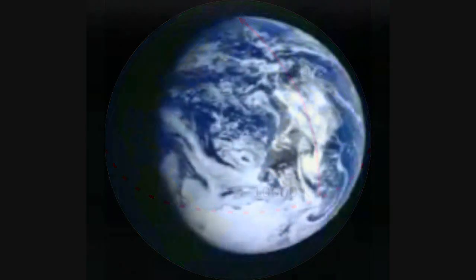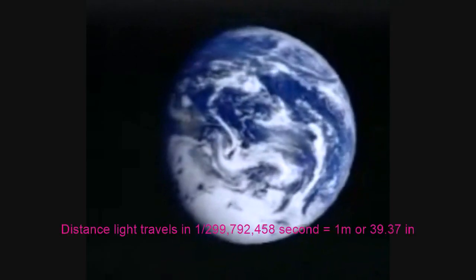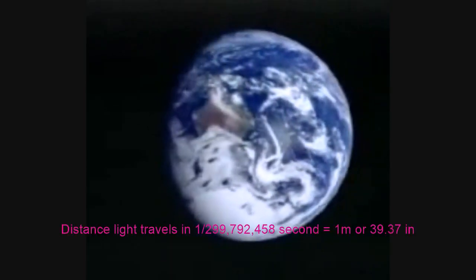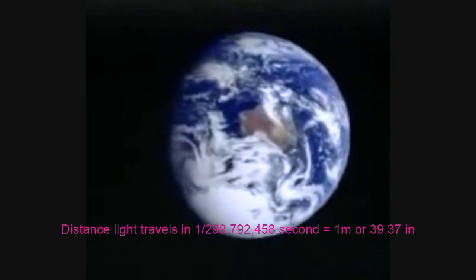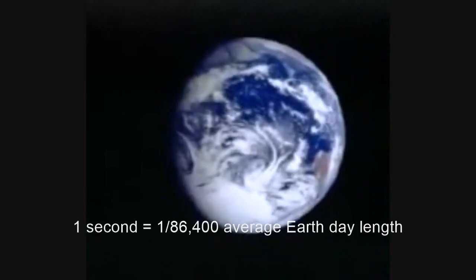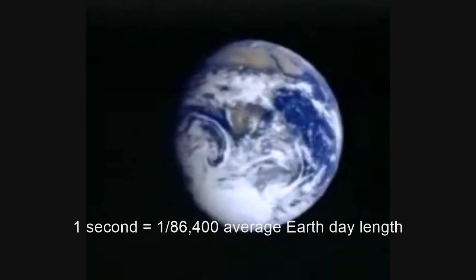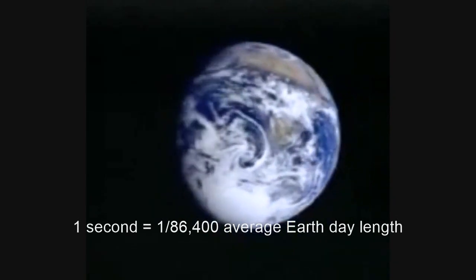And then there is the meter we use today, the speed of light meter, which is defined as the distance light travels in 1/299,792,458 of a second, where a second is one 86,400th division of the average day length on this planet.